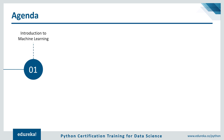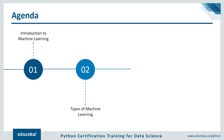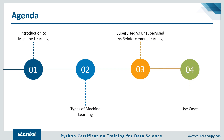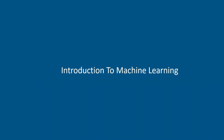So let me run you through today's agenda. We're going to begin the session with an introduction to machine learning. Next, we'll discuss the types of machine learning. After that, we'll compare supervised, unsupervised, and reinforcement learning based on a few key parameters. We'll finally end the session by discussing a few example problems that can be solved using supervised, unsupervised, and reinforcement learning algorithms. So without any further delay, let's get started.